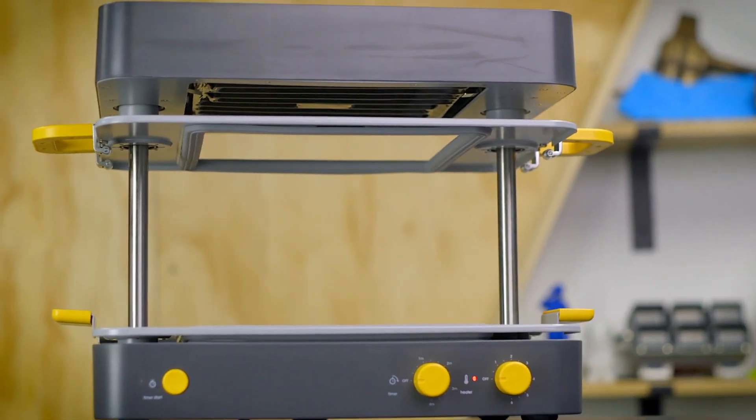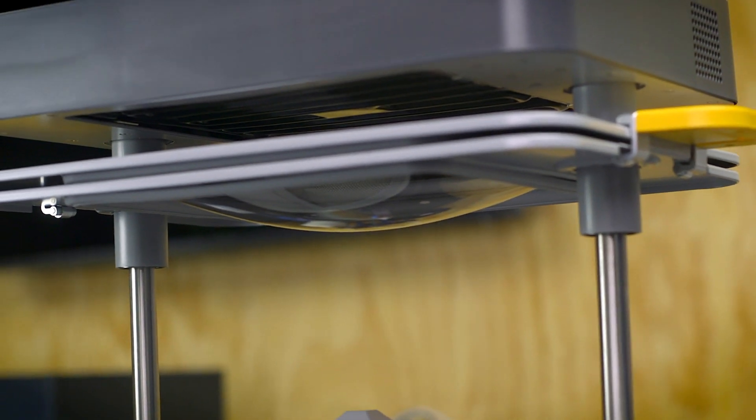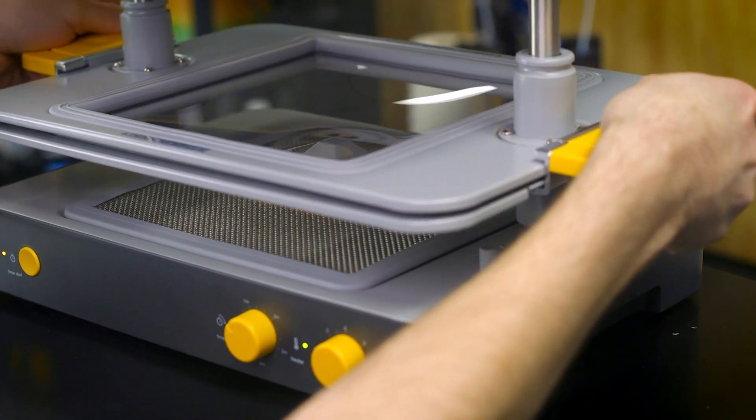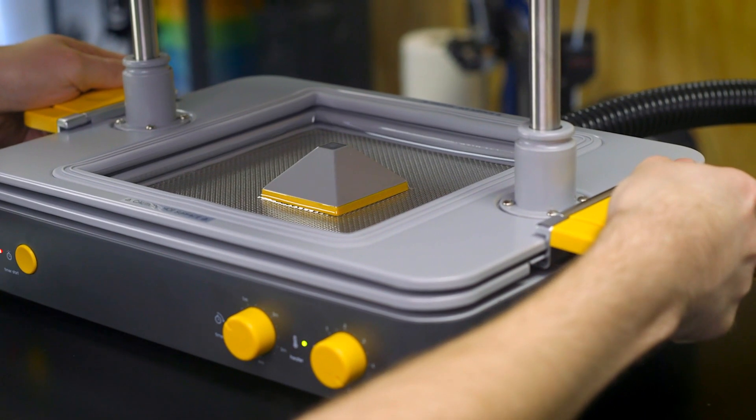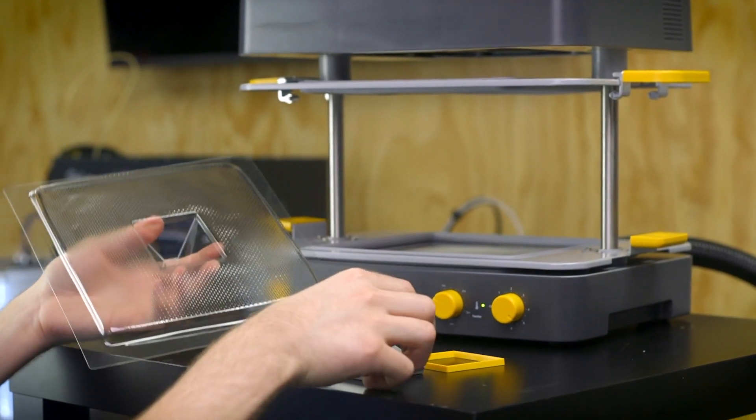Vacuum forming, also called thermoforming, is the process of heating a sheet of plastic until it is easily malleable and then formed into a desired shape. By using the power of a vacuum to remove the air out from underneath the plastic, a vacuum former is able to replicate the shape of the original object, called a forming buck.